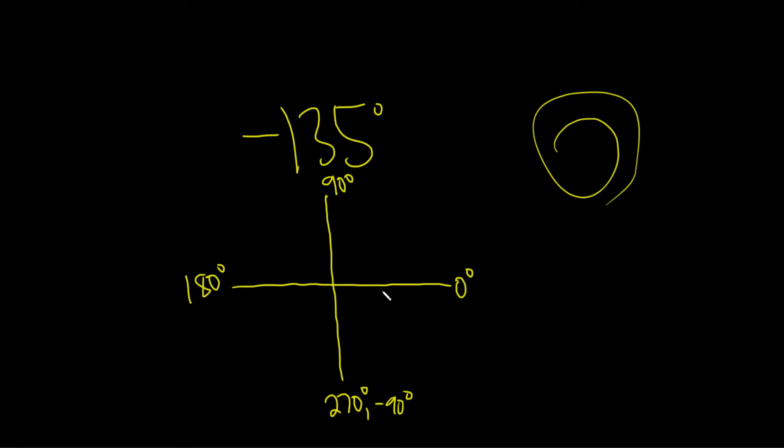So to get to negative 135, that's going to be over here, because this would be negative 180 here. So this is negative 135. It's between negative 90 and negative 180, so we stop it here.